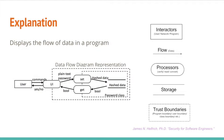A processor handles data within the program. The processor can verify the data, read the data, convert the data, and so on. Typically, a function in a program is a processor. When an interactor types a password into a program, that password would be represented by an arrow from the interactor user to the password prompt processor. That password prompt could send the password to a verifier processor, represented by an arrow from the password prompt processor to the password verify processor.